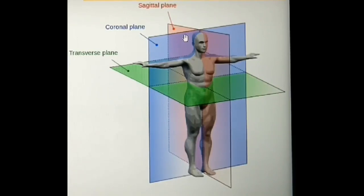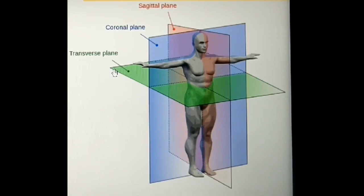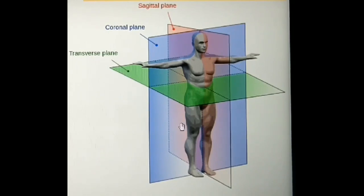The sagittal plane divides the human body into equal right and left halves through the midline, shown in red color. The coronal plane divides the body into anterior and posterior parts. The transverse plane, also called the axial or cross-sectional plane, divides the body into inferior and superior portions. Keep this in mind while discussing the topic.